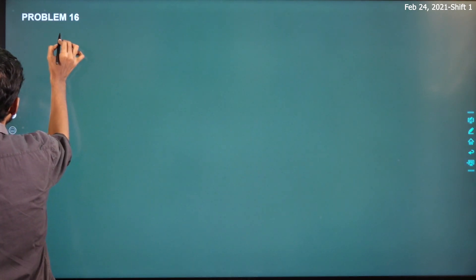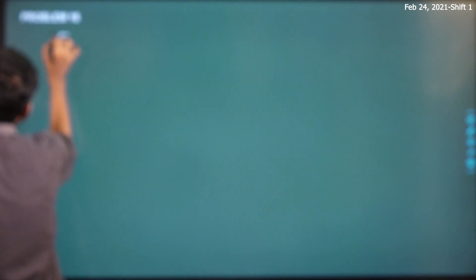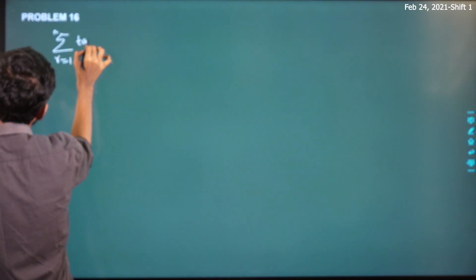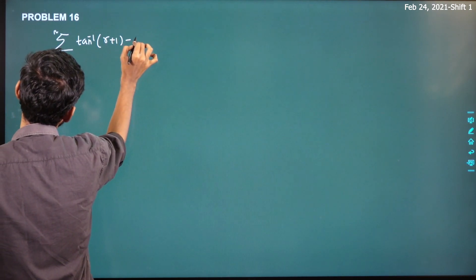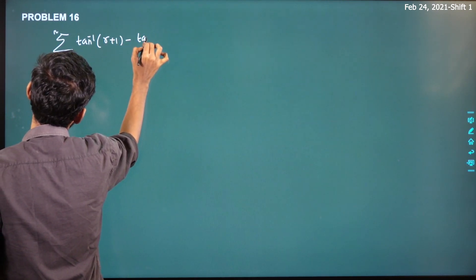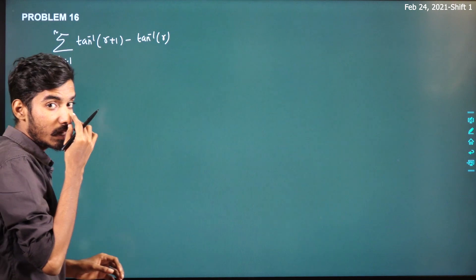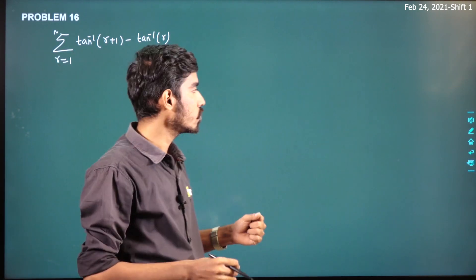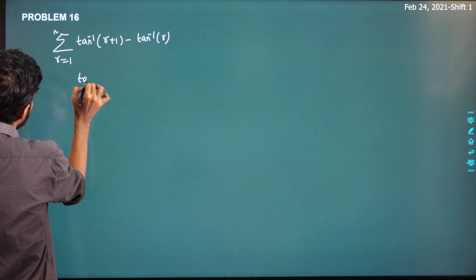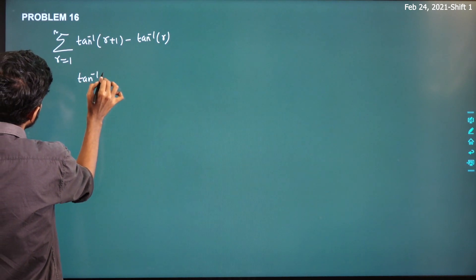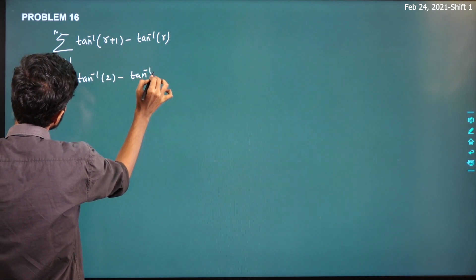So summation r from 1 to n of [tan inverse of (r plus 1) minus tan inverse of r]. Now this is really important. If r equals 1, we can sum up: tan inverse of 2 minus tan inverse of 1.